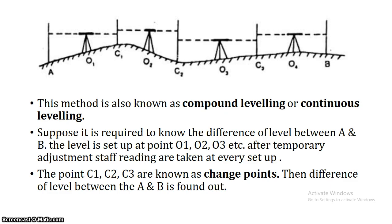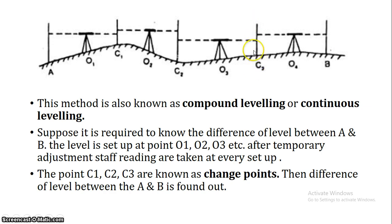In differential leveling, we have instrument stations O1, O2, O3, and leveling staff positions C1, C2, C3. C1, C2, C3 are the change points, where both foresight and backsight readings are taken. The instrument moves forward along the same direction to cover the full distance.